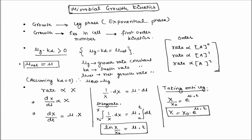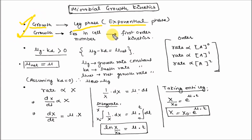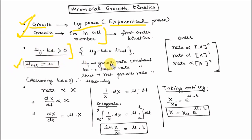This is the microbial growth kinetics. The growth occurs in the log phase, that is the exponential phase. Growth is increase in cell number. It follows first-order kinetics. As explained here, mu_g minus kd is greater than zero, that is mu_net. Mu_net is also denoted by mu.